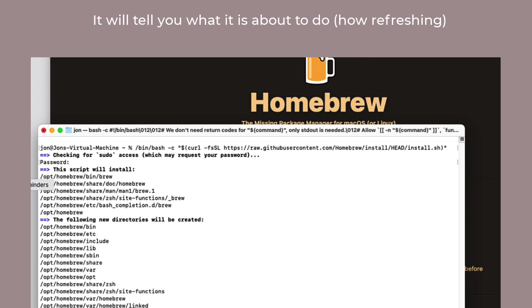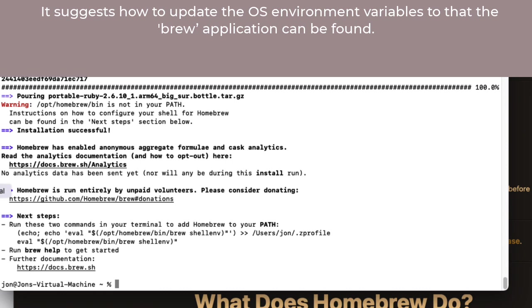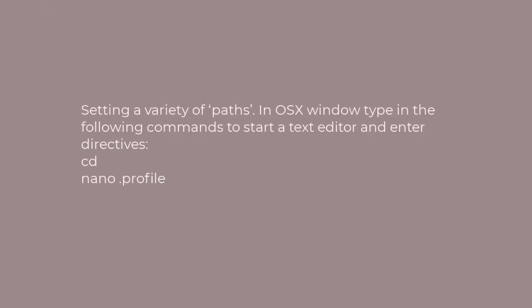The nice thing about Homebrew is that it tells you what it's about to do and asks your permission before it goes and does it. That's actually quite refreshing. Now it will take a little bit of time to download and install itself. When Homebrew finishes, it's going to suggest next steps and there are a couple of commands to copy with the mouse and then paste them in. Go ahead and do that.